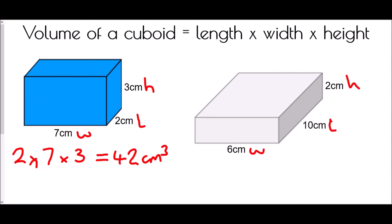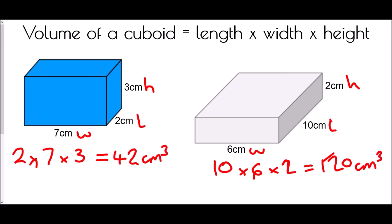Fourteen times three is 42 centimeters cubed. For the second diagram, using the same formula: length of ten times width of six times height of two — ten times six is sixty, times two is 120 centimeters cubed.